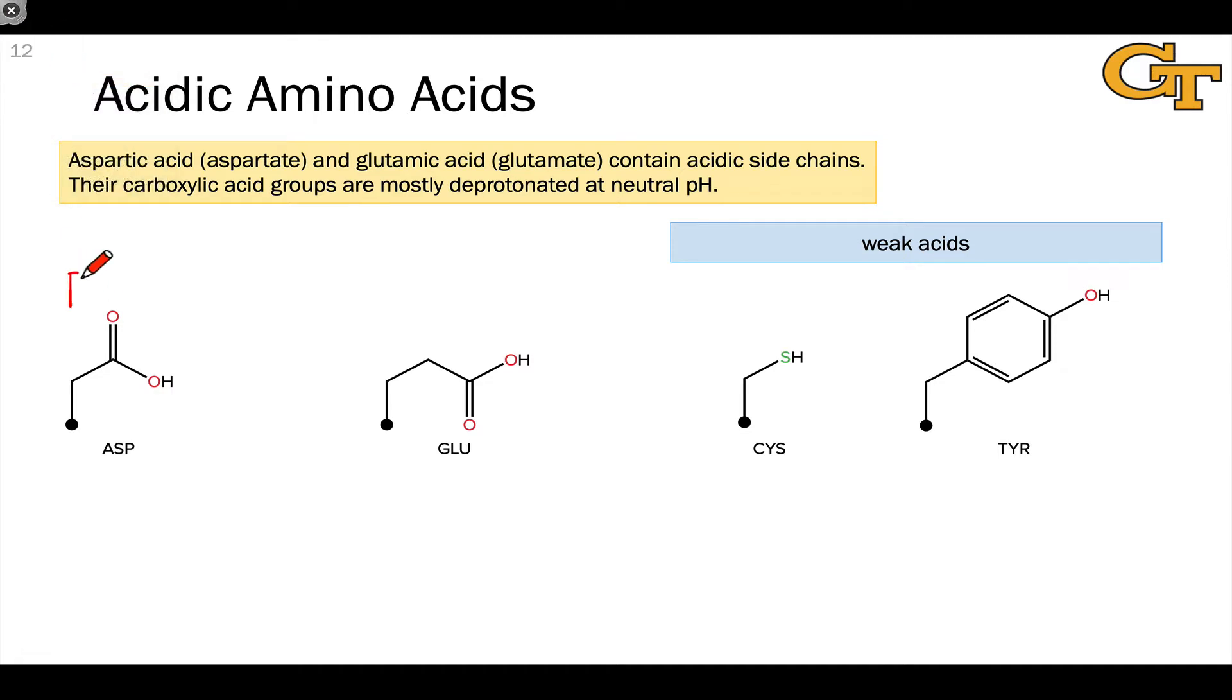The pKa values for those carboxylic acid protons, the carboxyl protons, are well less than 7 in both cases. And so under physiological conditions where the pH is typically around 7, these will be predominantly deprotonated to form carboxylates.